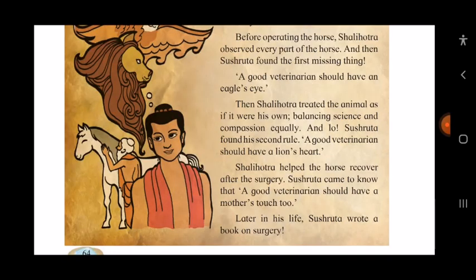Then Shalihotra treated the animal as if it were his own, balancing science and compassion equally. Sushruta found his second rule: a good veterinarian should have a lion's heart. Compassion means a feeling of sympathy. So while treating animals, Shalihotra balanced both science and compassion.